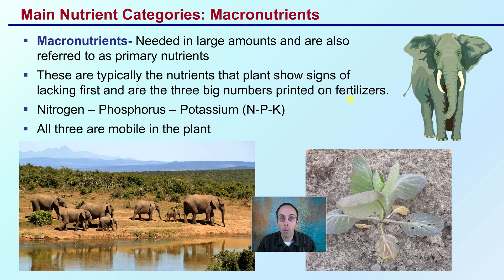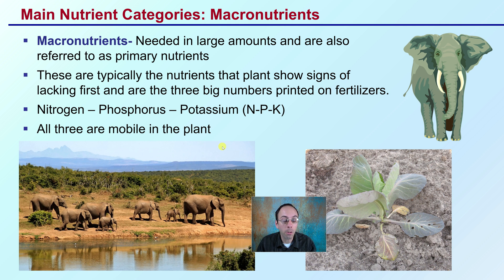Those three numbers that you always see are referring to nitrogen, phosphorus, and potassium — the NPK ratio. And all three of these are actually mobile nutrients, which is important when we might be looking at diagnosing potential deficiencies or issues. These are mobile nutrients within the plant. That's our first category, the macronutrients.